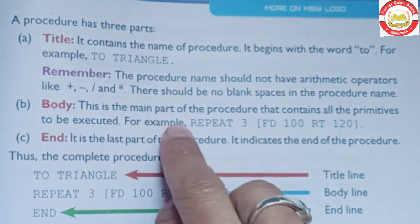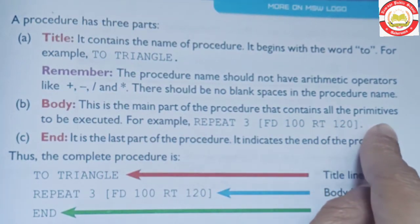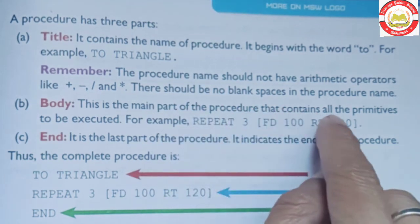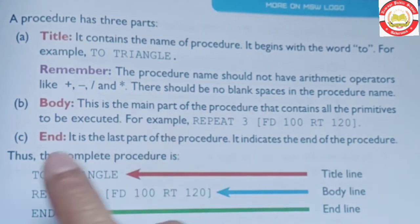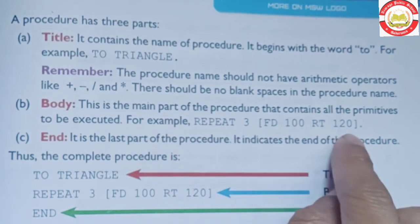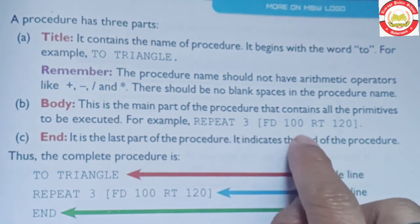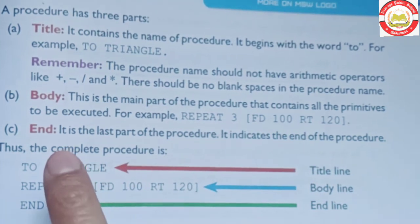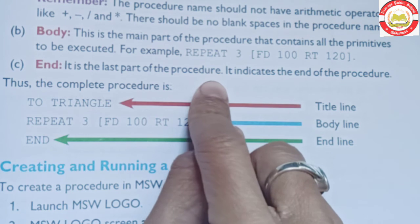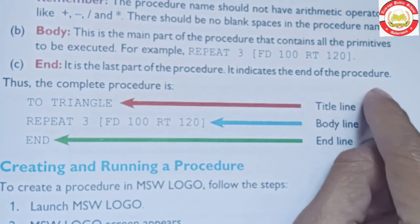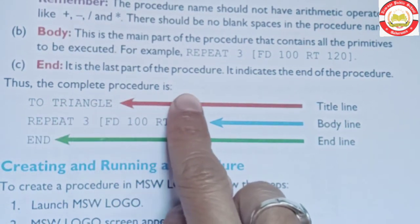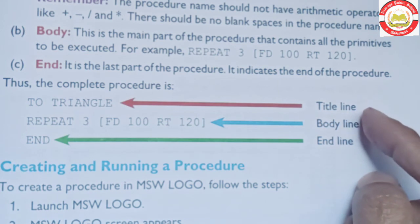Body: this is the main part of the procedure that contains all the primitives to be executed. Body procedure ka ek main part hota hai jis mein sabhi primitives hoti hain jin ko hum execute karte hain — for example: repeat 3 [FD100 RT120]. End: it is the last part of the procedure; it indicates the end of the procedure. Thus, the complete procedure has: title, body, and end.